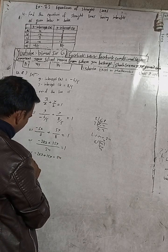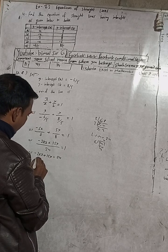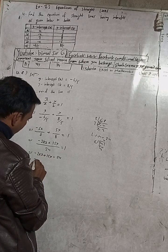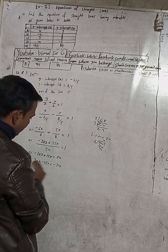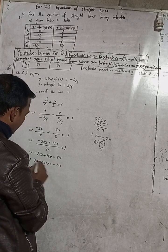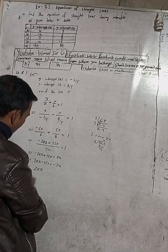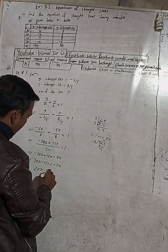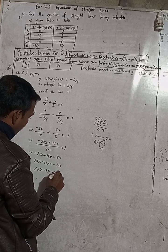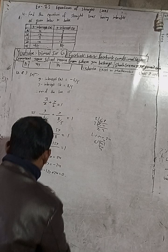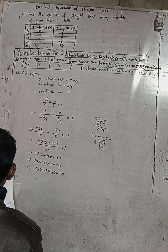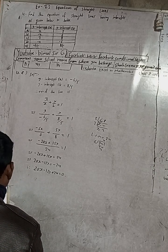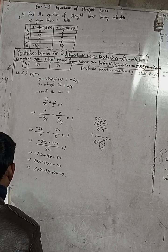Change the sign: minus 20x becomes plus 20x, plus 15y becomes minus 15y, and 24 becomes minus 24. So 20x − 15y + 24 = 0. This is our required equation for part E. The answer is 20x − 15y + 24 = 0 — correct answer.